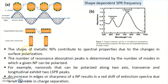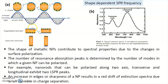The shape of metallic nanoparticles contributes to spectral properties due to changes in the surface polarization. The number of resonance absorption peaks is determined by the number of modes in which a given nanoparticle can be polarized. This nanoparticle can polarize in two directions, therefore there are two modes. If you take a complex geometry with three different directions, you may observe three modes in the absorption spectra.